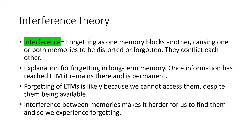So, interference theory — what do we mean by interference? This is forgetting as one memory blocks another, and what that does is result in one or both of those memories being distorted or forgotten — they conflict each other. Interference theory is an explanation for forgetting in long-term memory. Once your information has reached long-term memory it remains there and is permanent, but forgetting takes place because we cannot access what is already in our long-term memory despite it being available. Interference between memories makes it harder for us to find them, so we experience forgetting.